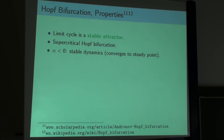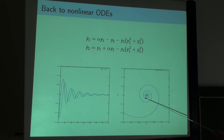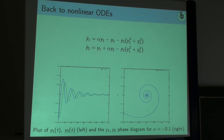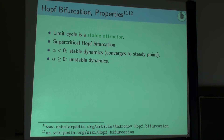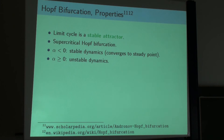For negative alpha we have the well-known old behavior - no limiting cycle, just a stable limit point. For alpha greater than or equal to zero, we have unstable dynamics. Unstable means there is not one unique limit point - it's a limit cycle, so the solution cycles. The mathematical analysis is based on the so-called Lyapunov coefficients.